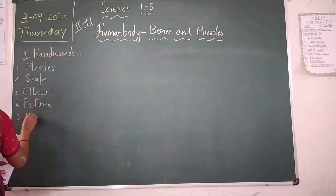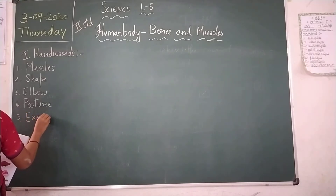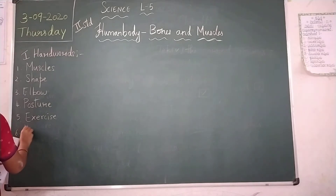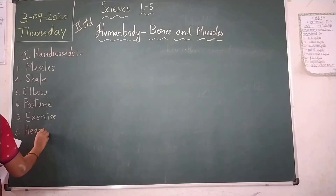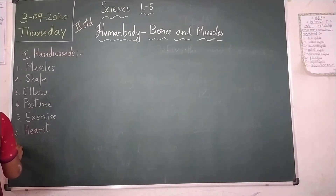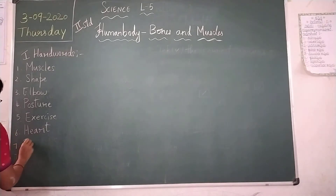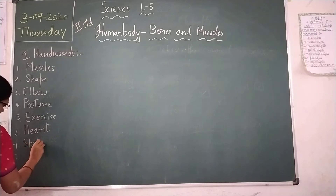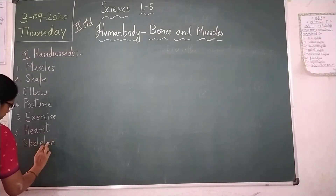Fifth one is exercise — E-X-E-R-C-I-S-E — exercise. Sixth one is hard — H-A-R-D — hard. Seventh one is skeleton — S-K-E-L-E-T-O-N — skeleton.